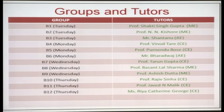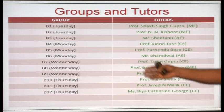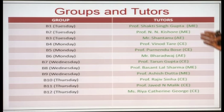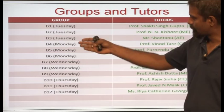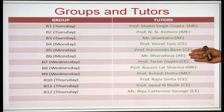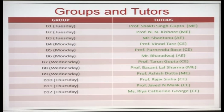So your class is divided into twelve groups of I would say forty students each on an average. B 1, B 2 and B 3 they will be doing the labs on Tuesday, tutors are Professor Shakti Singh Gupta, Professor N N Kishore and Mr. Shantanu. The first two from mechanical engineering, the third from aeronautical engineering. B 4, B 5, B 6 they will do the labs on Monday and you will have Professor Tare, Professor Bose and Mr. Bhardwaj as your respective tutors. Sections B 7, B 8 and B 9 are planned for Wednesday with Talam Gupta, Basundalaj Sharma and Ashish Dutta from civil and mechanical engineering. And B 10 to B 12 they will be doing the labs on Thursday with Rajiv Sinha, Javed Malik and Ria Catherine George all from civil engineering.